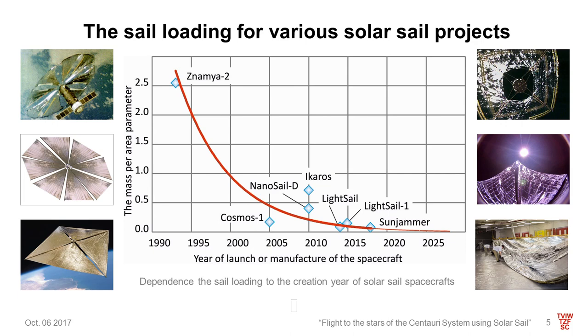The advantage of a solar sail spacecraft is the lack of fuel, so the mission may continue as long as it takes. The disadvantages of a solar sail spacecraft are the smallness of the acceleration and the dependence of its acceleration on the distance to the sun. The farther from the sun, the less is the pressure of sunlight, and thereby the acceleration of the sail.